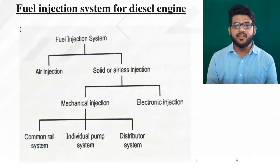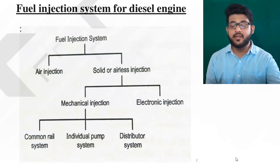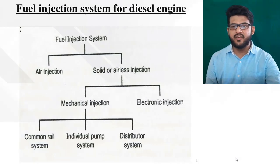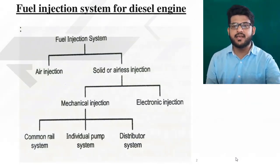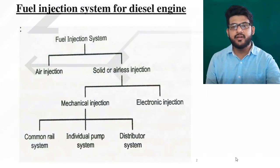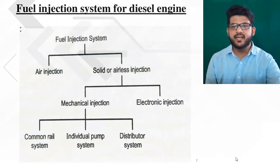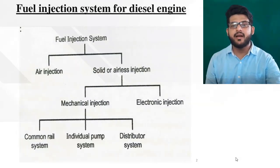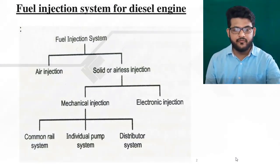In previous sessions we have seen that there are different types of engines and different types of injection systems. Basically, there are two types: one is air injection and second is solid injection. Solid injection has two subtypes: mechanical and electronic injection. In mechanical injection, there are three main systems: CRDI, individual pump system, and distributed system.